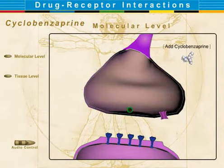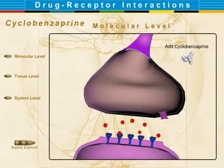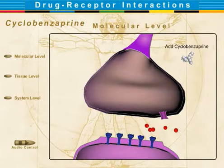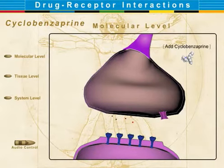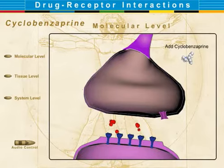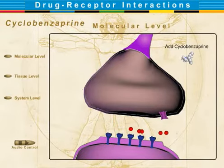Serotonin is a potent stimulant of pain in pain neurons. The serotonin activates the postsynaptic 5-HT2 receptors, allowing the transmission of a pain impulse, and is then transported back into the presynaptic neuron through reuptake.